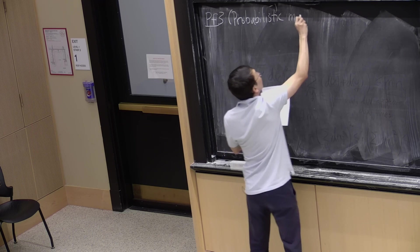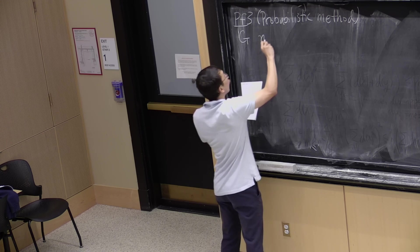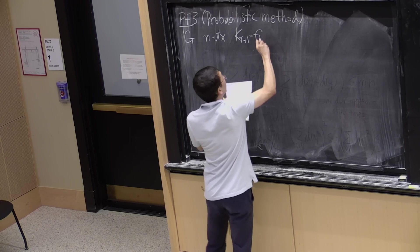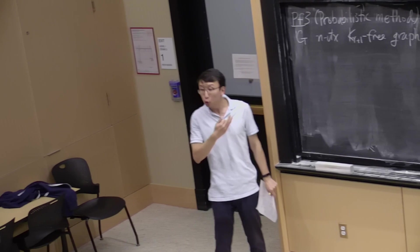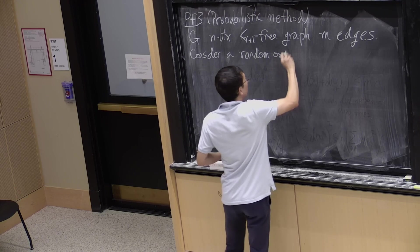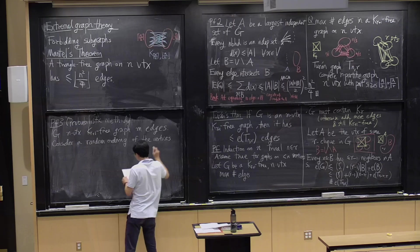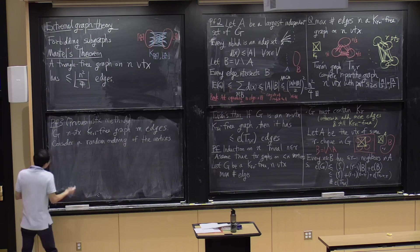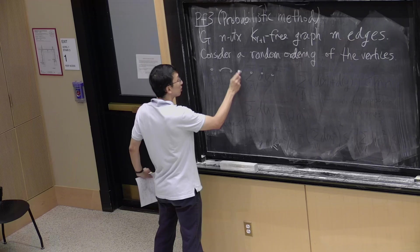We start with G being an n-vertex K_{r+1}-free graph on m edges. What I want to do is randomly sort the vertex set — consider a random ordering of the vertices. I put all the vertices on a line, chosen in random order.